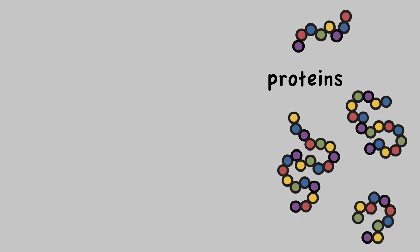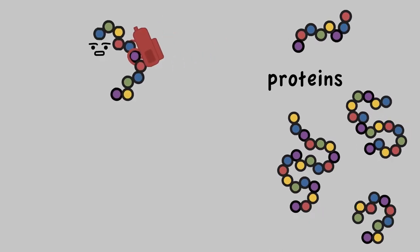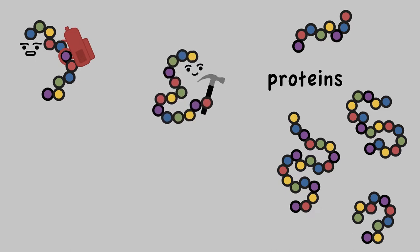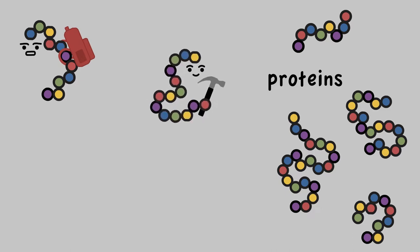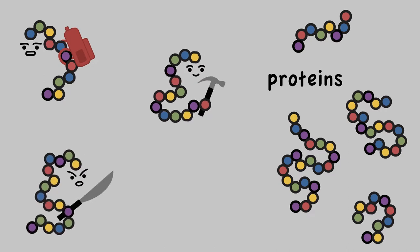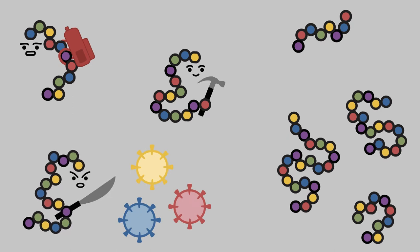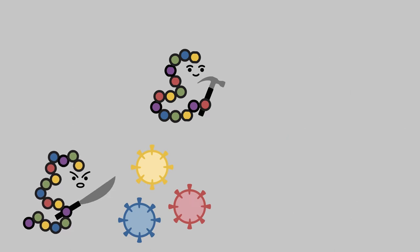For example, some proteins help transport other molecules across the cell. Some are enzymes that help form new molecules or break down old molecules. And some are antibodies that help defend against viruses or other foreign invaders. Without proteins, we couldn't exist.